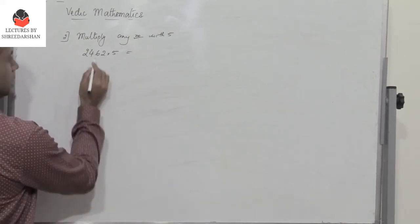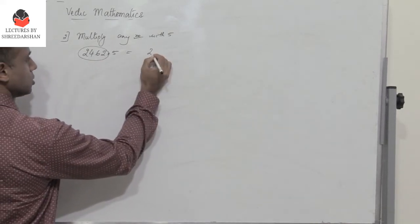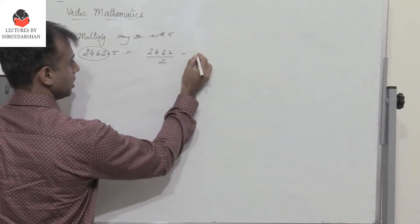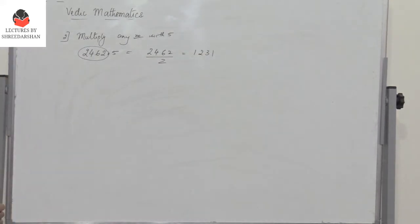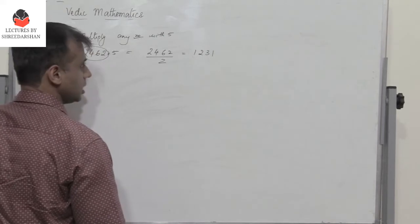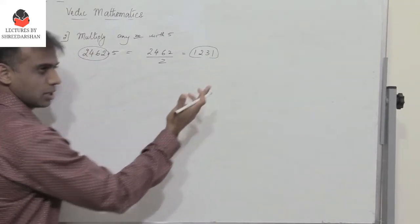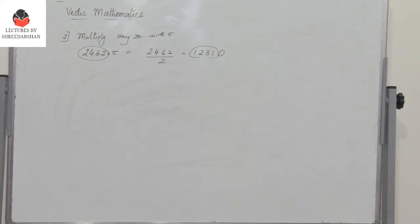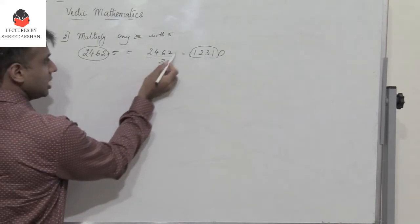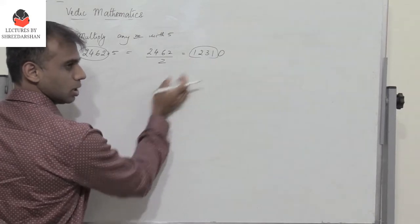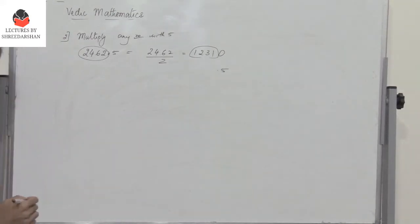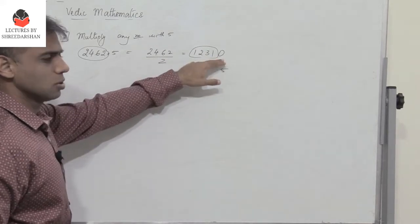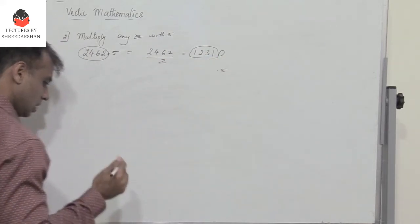The procedure is: take the given number — 2462 — and divide it by 2. Dividing any number by 2 is very easy, so I get 1231. If the result is a whole number with no fractions, you add 0 at the end and that is the answer. When you divide an even number by 2 you get a whole number — just divide by 2, add a 0, and that's the answer. Let's try 3456 into 5: divide by 2 to get 1728, it's a whole number, attach 0 — that's the answer.